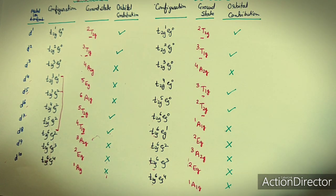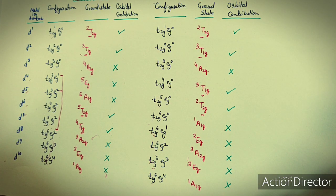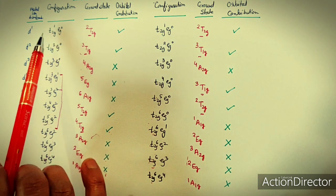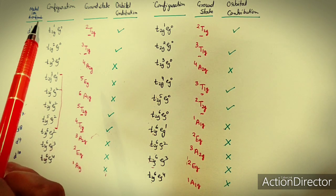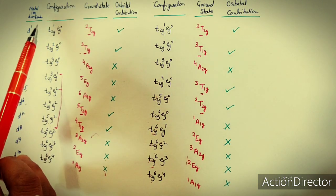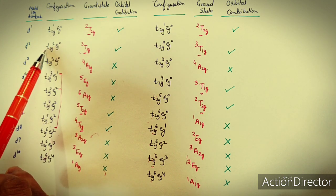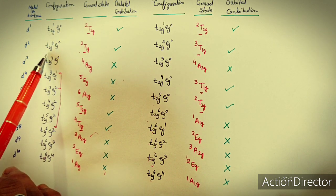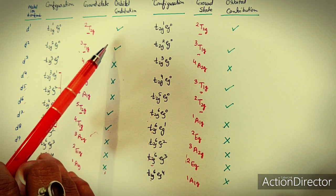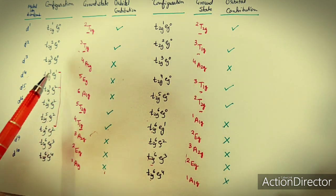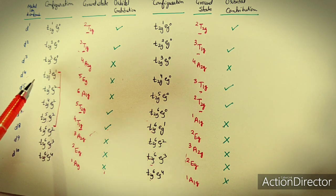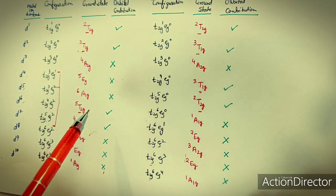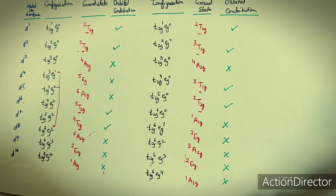You can see that except for the T ground state terms, all other ground states — A or E, A2, A1 — do not show any orbital contribution towards the magnetic moment. So ground state terms with A and E are not showing orbital contribution. This is because the T2g is asymmetrically filled when the ground state is T, since T is triply degenerate. If it is symmetrically filled, the ground state term may be A or E, and there is no orbital motion contribution towards the magnetic moment.